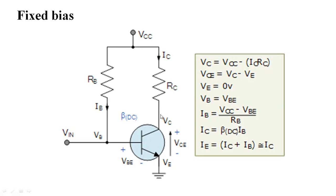If we try to calculate the value of VCE and IC, we use these equations. To calculate VCE — the collector-to-emitter voltage — we apply: VCC minus the voltage along resistor RC. So VCE equals VCC minus IC·RC.